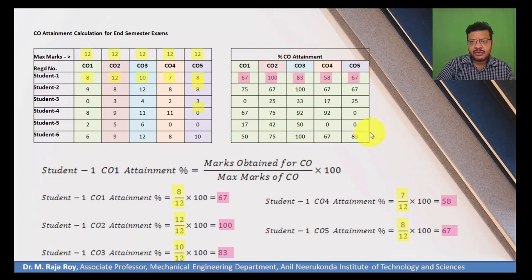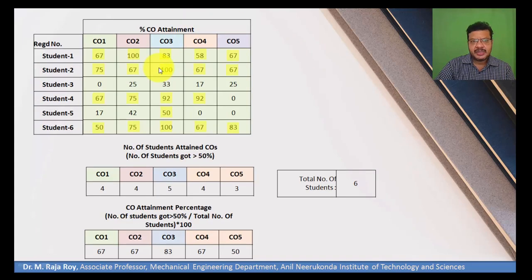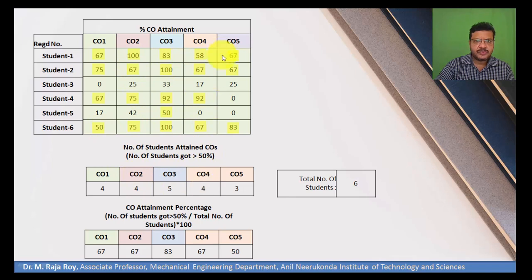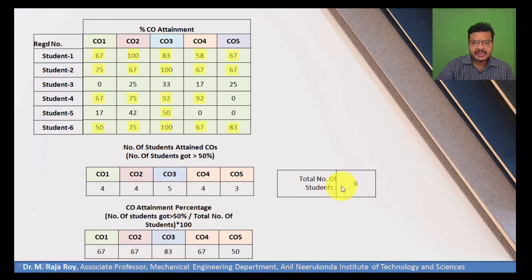Now take this student CO attainment table and count the number of students who secured more than 50% for each CO. For CO1, 4 out of 6 students are above 50. CO2 also has 4. CO3 has 5. CO4 has 4. CO5 has only 3. With 6 total students, the CO attainment percentages for end-semester are: CO1 = 67%, CO2 = 67%, CO3 = 83%, CO4 = 67%, CO5 = 50%.